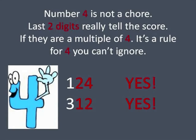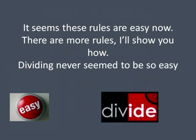Number four is not a chore. Last two digits really tell the score. If they are a multiple of four, that's a rule for four you can't ignore. It seems these rules are easy now. There are more rules, I'll show you how. Dividing never seemed to be so easy.